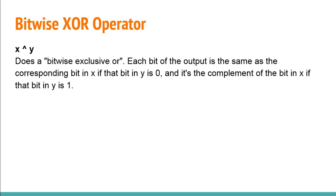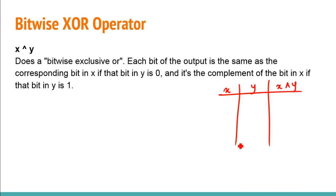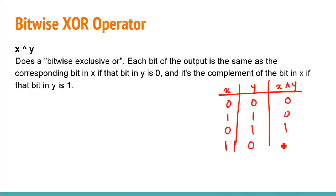Next we have the XOR operator, which is a little different from the rest. Each bit of the output is the same as the corresponding bit in x if the bit in y is zero, and it's the complement of the bit in x if the bit in y is one. The truth table: 0 XOR 0 = 0, 1 XOR 1 = 0, 0 XOR 1 = 1, and 1 XOR 0 = 1.